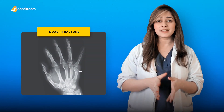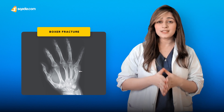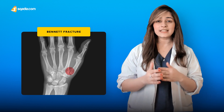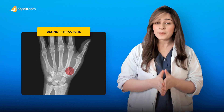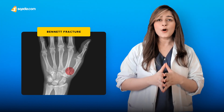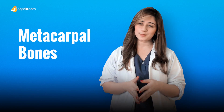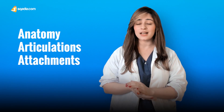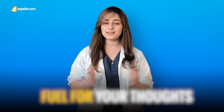The neck of the metacarpal is a common location for the boxer's fracture, hence the term 'boxer's fracture.' Bennett's fracture is the most common fracture involving the base of the thumb — it is an intra-articular fracture separating the palmar aspect of the first metacarpal base from the remaining first metacarpal bone. This concludes the anatomy, articulations, and attachments of the metacarpal bones.